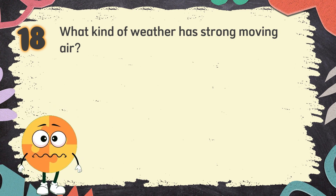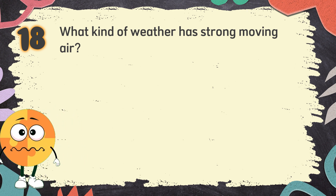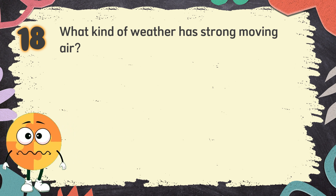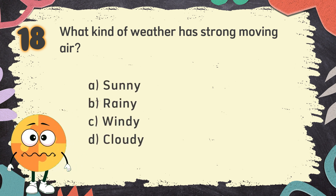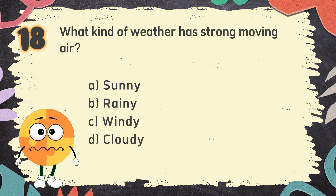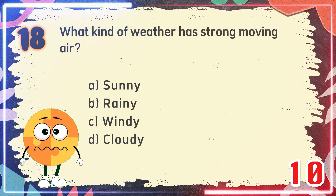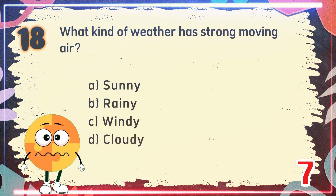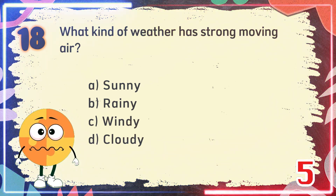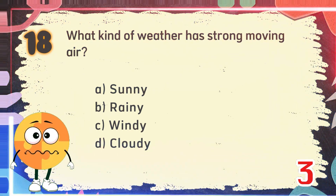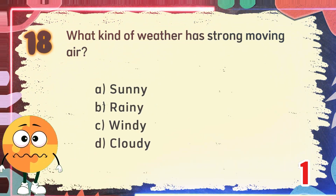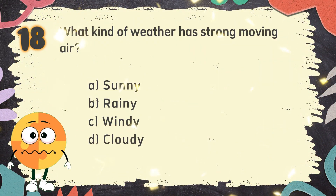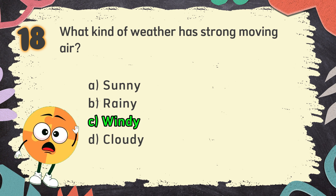Number 18: What kind of weather has strong moving air? The choices are: A. Sunny, B. Rainy, C. Windy, D. Cloudy. The correct answer is C. Windy.